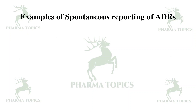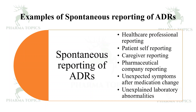This contributes to the ongoing assessment of the medication's benefit-risk balance and patient safety. Examples of spontaneous reporting include healthcare reporting, patient self-reporting, caregiver reporting, and pharmaceutical reporting. Other examples include unexpected symptoms after medication change — such as switching to a generic medication — and unexplained laboratory abnormalities, for example elevation of liver enzymes.